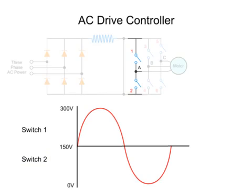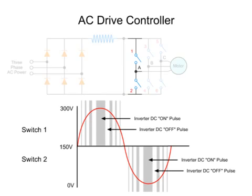The inverter output is not a true sine wave, but an approximation based on the application of pulse width modulation, or PWM. The longer a switch is on, the higher the AC output voltage. Conversely, the longer a switch is off, the lower the output voltage. This duration of on time for each pulse is called pulse width. The time duration and intervals of these DC voltage pulses determine the synthesized AC output voltage and frequency.